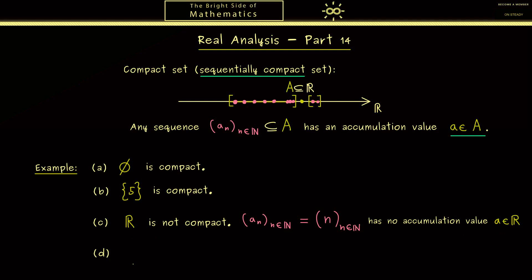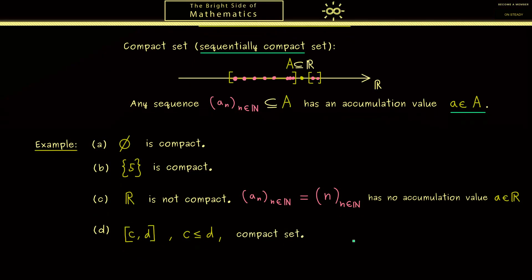Next let's look at a closed interval. Such an interval with real numbers c and d is indeed a compact set. Ok so let's try to prove this.